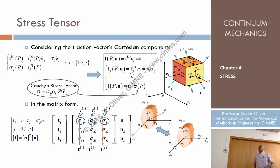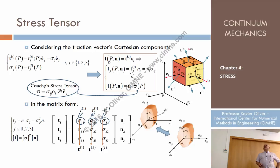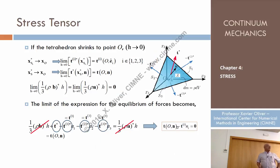Sigma 1,1 can be understood as the intensity of a vector in one direction; sigma 1,2 as the intensity in another direction; and sigma 1,3 as the intensity of a vector in the third direction. The sum of these three component vectors is T1. I could do the same for T2 and T3. The final conclusion from the equation we derived before says that the traction vector T at point P in direction N is T_i times N_i.